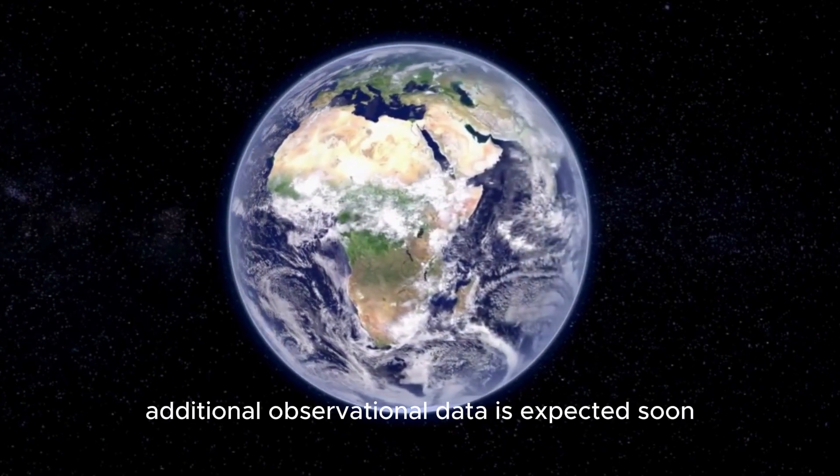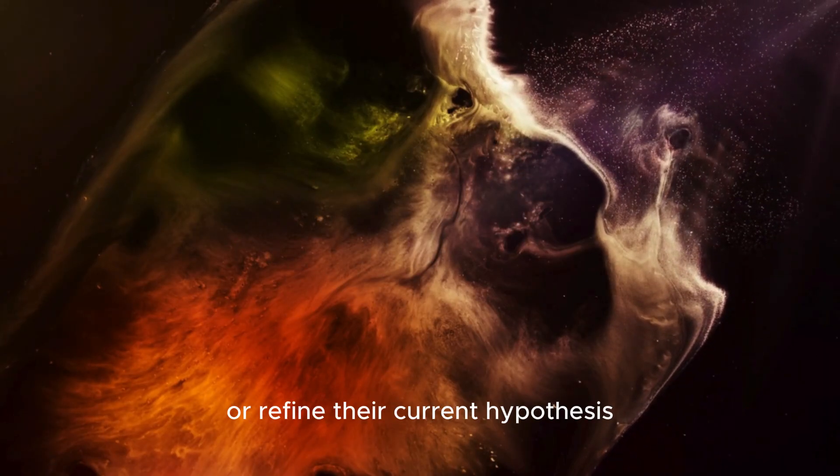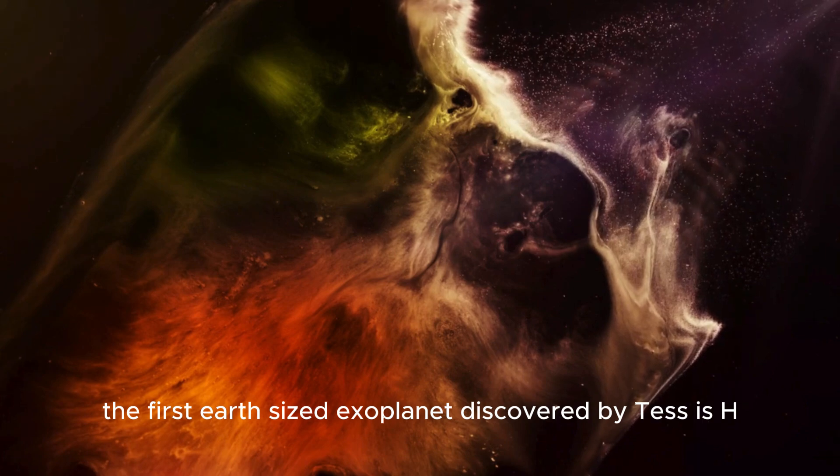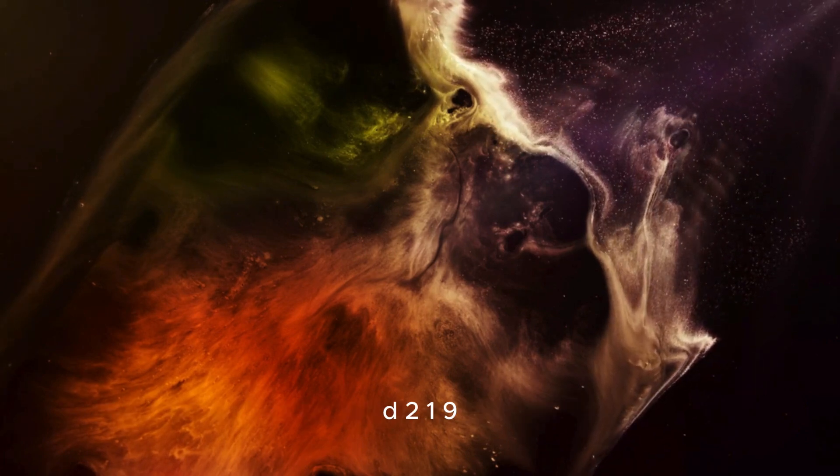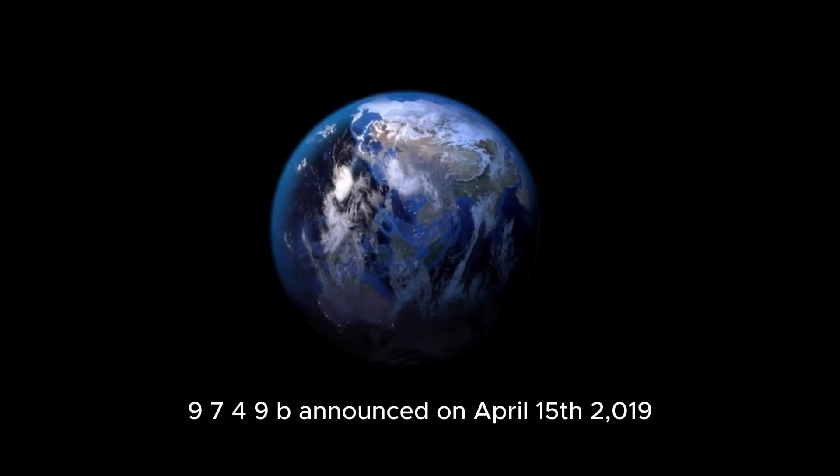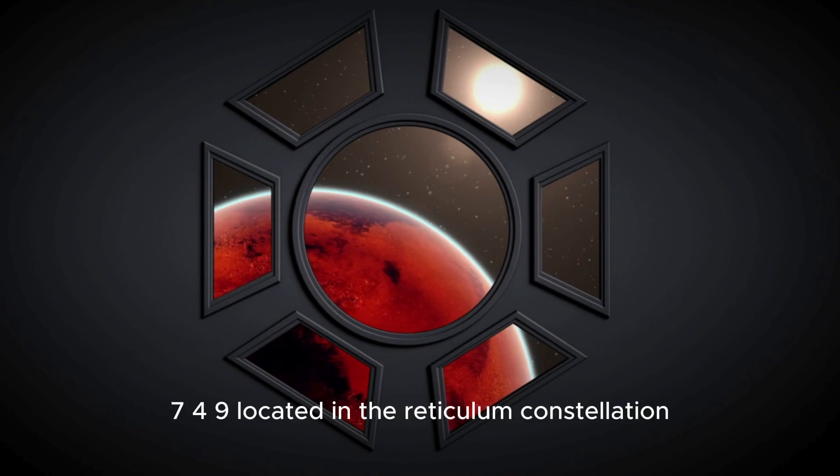Additional observational data is expected soon, allowing scientists to confirm or refine their current hypotheses. The first Earth-sized exoplanet discovered by TESS is HD 2199749b, announced on April 15, 2019. This exoplanet orbits the orange main sequence star HD 2199749, located in the Reticulum constellation.